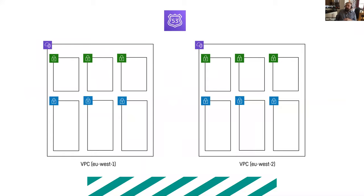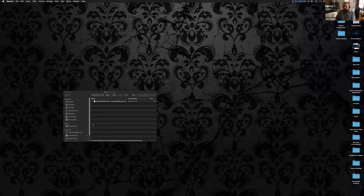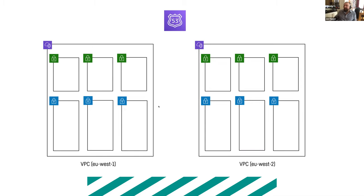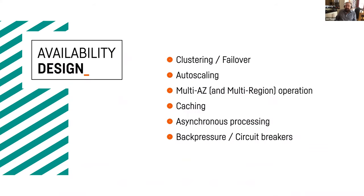Depending on your availability requirements, you can also deploy your app into multiple regions and use Route 53 DNS to route or balance traffic between them. In that model you have to worry about how to move data around between those regions, which adds complexity, but if your availability requirements are very stringent you need to spend that time and energy making it happen.